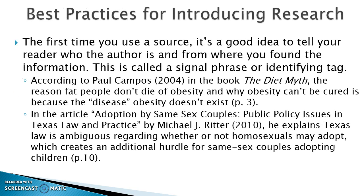For introducing research, you want to include information about your researcher — tell who your author is and where you found that information. That's called a signal phrase or an identifying tag. What it does is give the street credibility of your source. Students often like to include signal phrases because they use up more words. For example: 'According to Paul Campos' — here's your author — and then the year, because the year comes after the author's name in APA format. Then 'in the book The Diet Myth' — that tells you what kind of source this is.